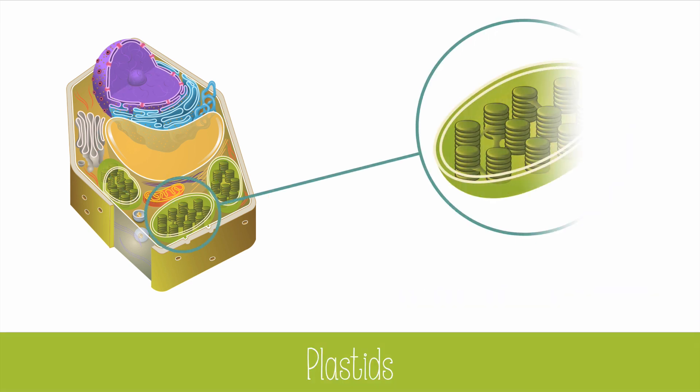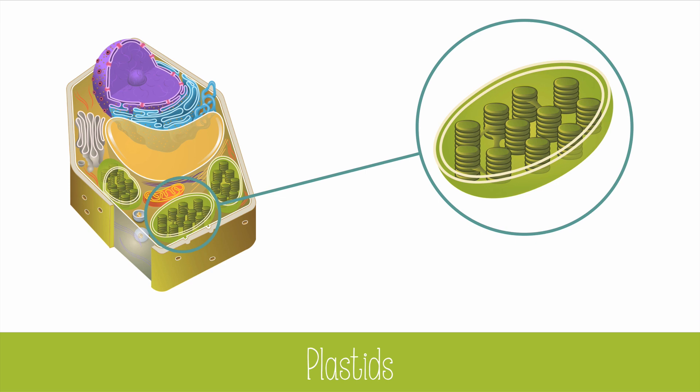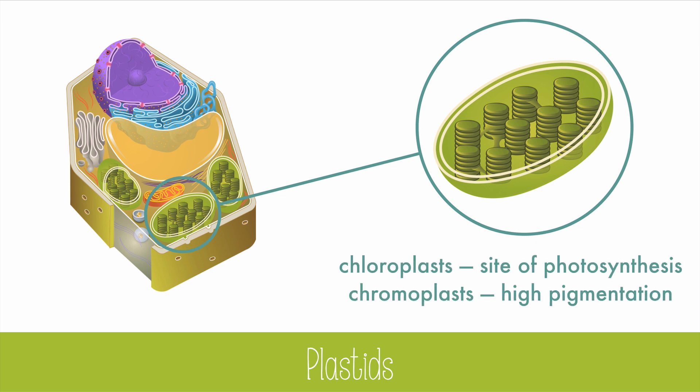Plastids include chloroplasts, chromoplasts, amyloplasts, and others. Chloroplasts are the site of photosynthesis. Chromoplasts have high amounts of pigmentation and are often found in flower petals or the skins of fruits — some chloroplasts turn into chromoplasts during the ripening process. Amyloplasts are another type of plastid; they store starch for the plant for energy, and they are found in potatoes, which we can turn into french fries.